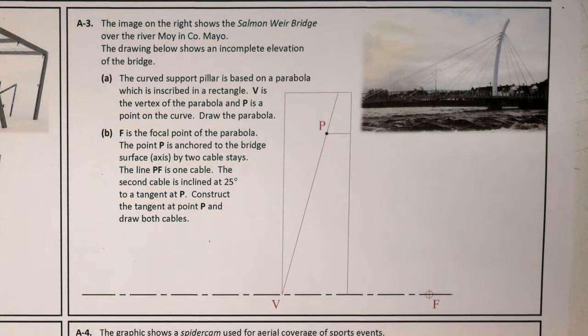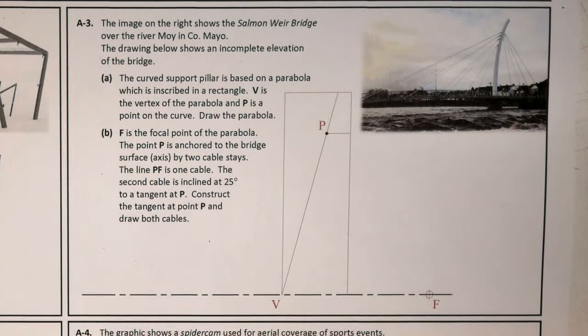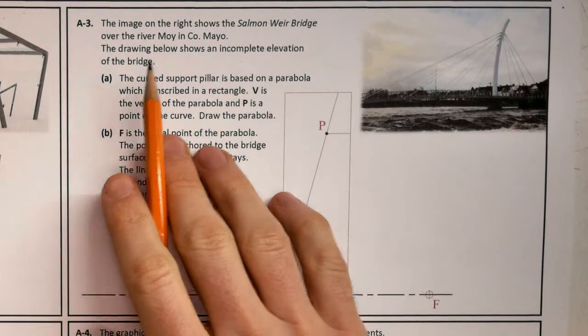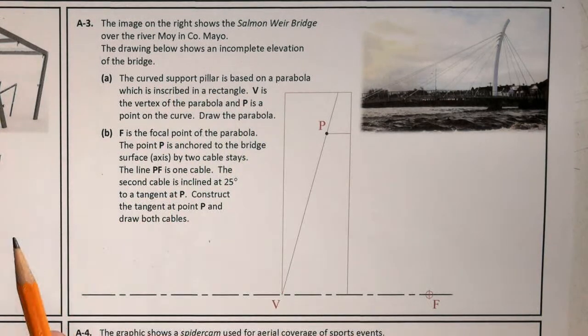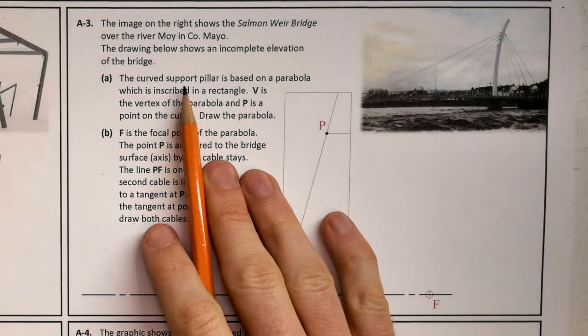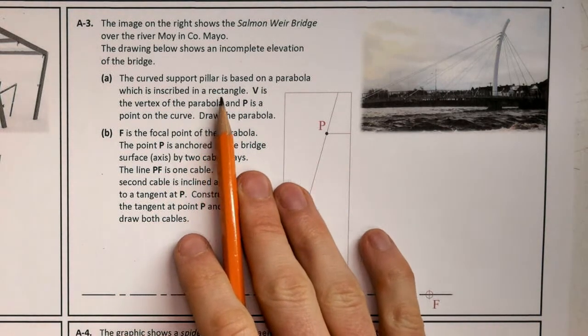Welcome to 2018 question A3. This is a conics question. The image on the right shows the Salmon Weir Bridge over the River Moy in County Mayo. The drawing below shows an incomplete elevation of the bridge. The curved support pillar is based on a parabola which is inscribed in a rectangle.